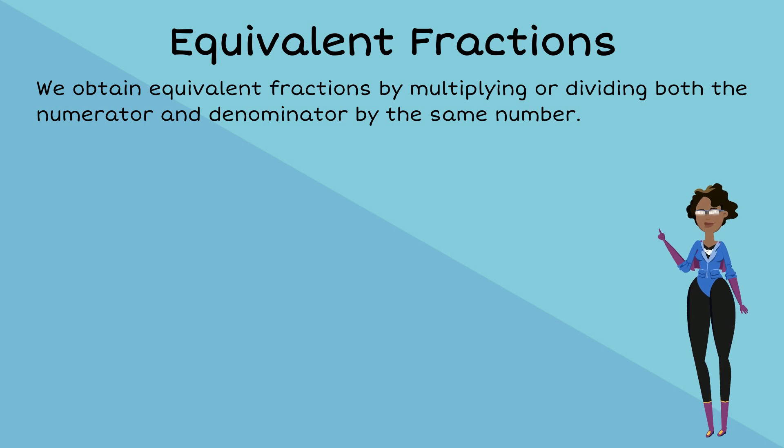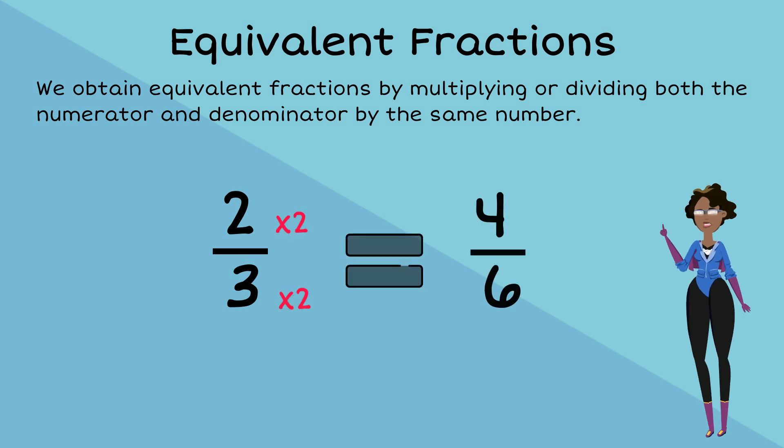For example, if we take the fraction two-thirds and multiply the numerator and denominator by two, we get the fraction four-sixths.